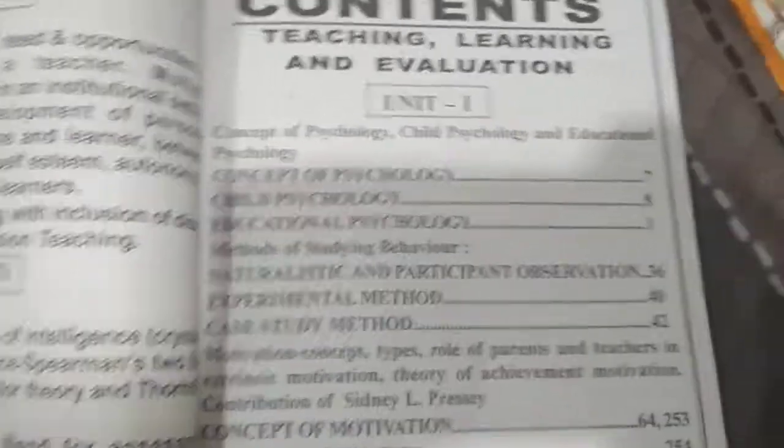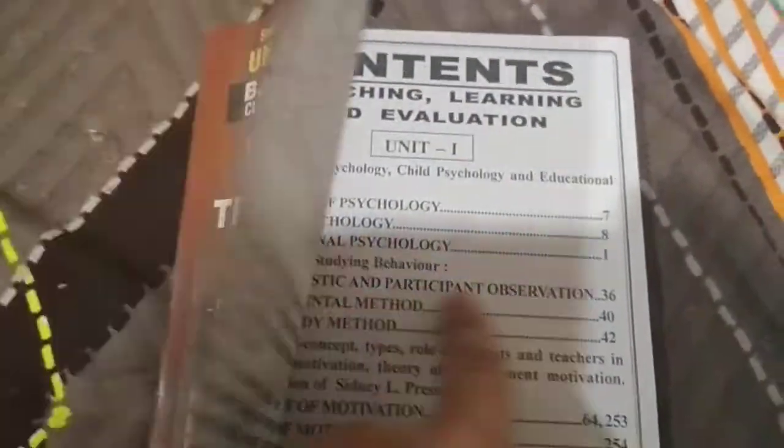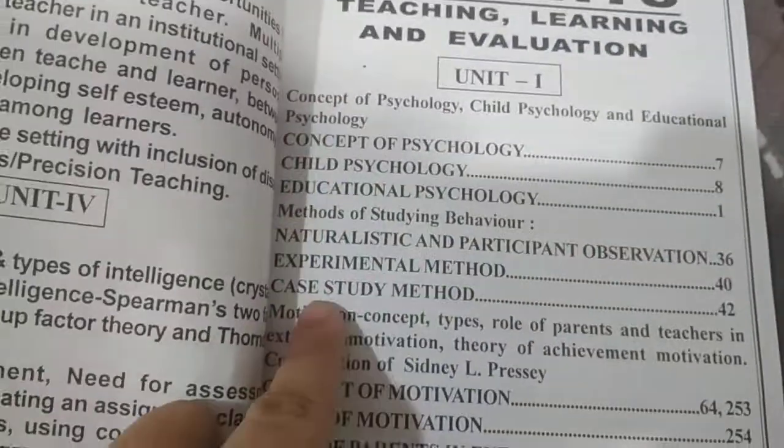Now another thing you have to see is the page numbers mentioned in front of the contents. We have to check whether these page numbers actually justify the topics in the contents. For example, in Unit 1, Case Study Method is listed at page 42. Let's check page 42. You can see pages 40, 41, and 42 — there's a little misprint — but at page 42, Case Study Method is there.